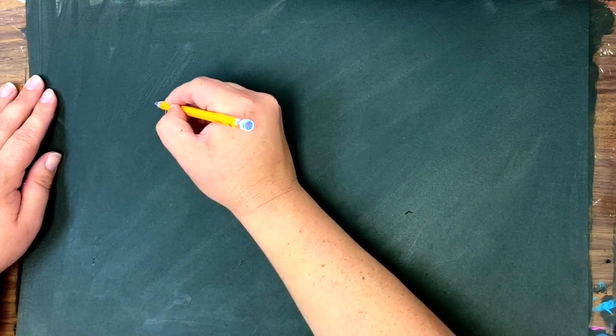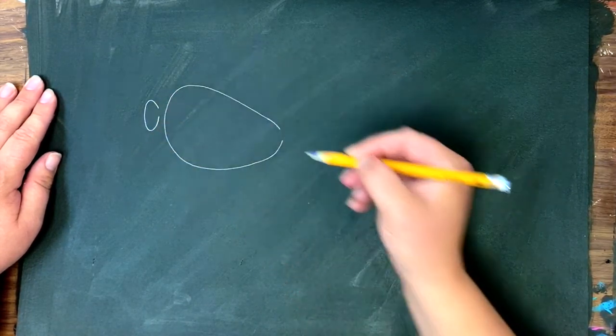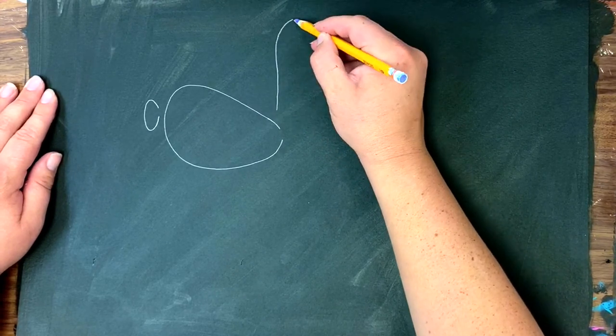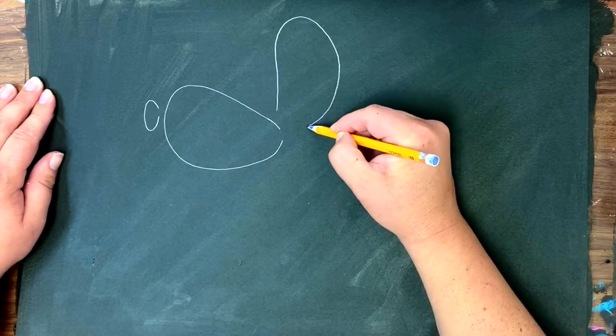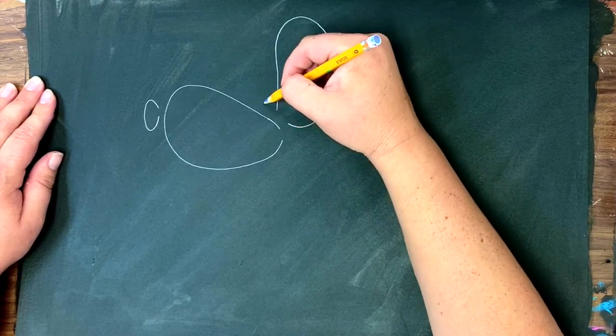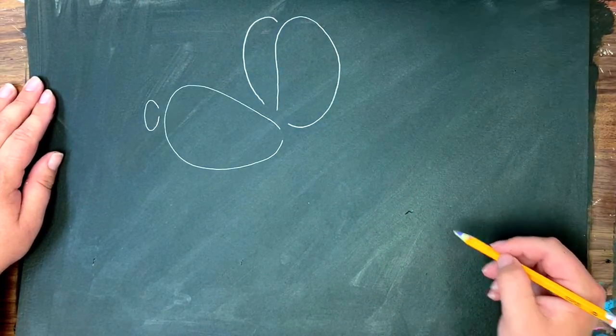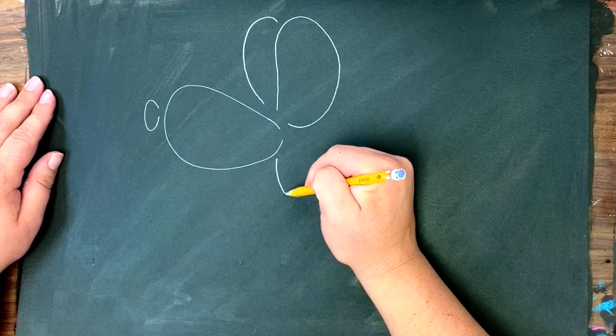This is where the balloon would tie off where our knot would be so almost looks like a little C. Then we're gonna come up around almost like a very tall rainbow and connect it back over and one more line to complete the other ear. Now it's time for our neck.